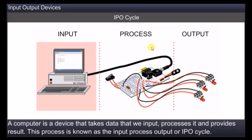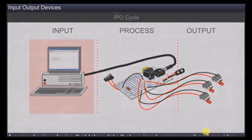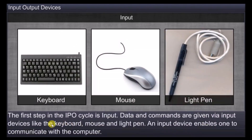The CPU processes the data and provides a result. That result is displayed on an output device. This process is known as the IPO cycle — the Input-Process-Output cycle. The first step of the IPO cycle is input.